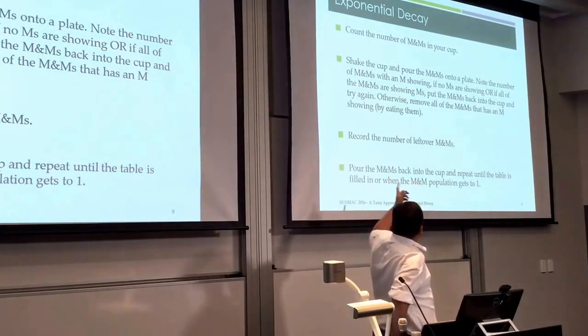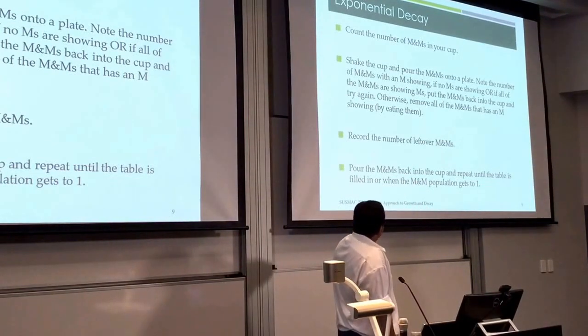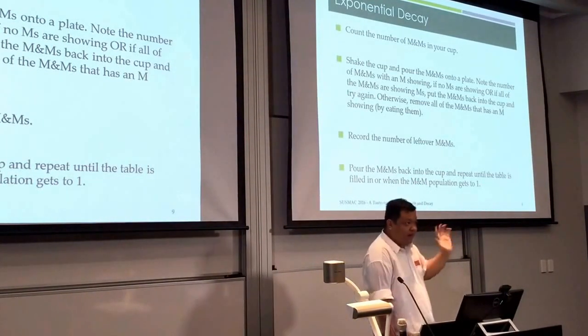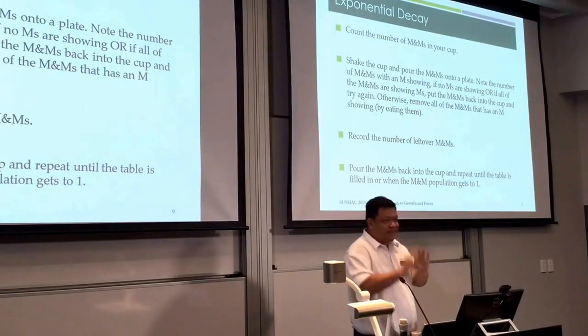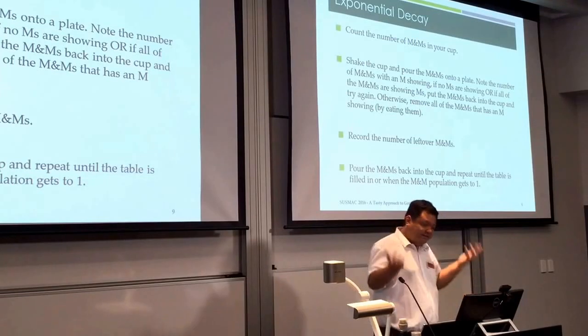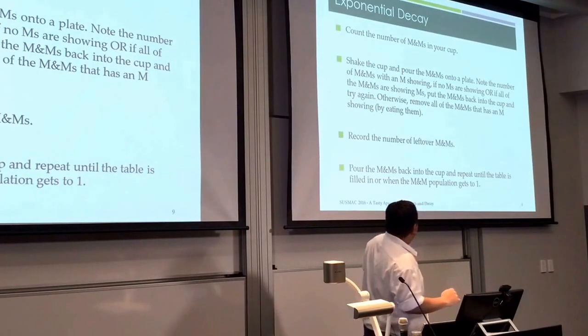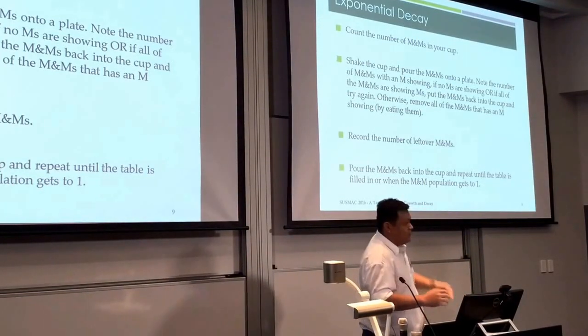Again, as a little bit of disclaimer, if all of the M&Ms are actually showing M's or if none of them are showing M's, ignore it and try again. We don't want it to get down to zero because exponential decay doesn't get down to zero. And we don't want them to not have decay of some sort.